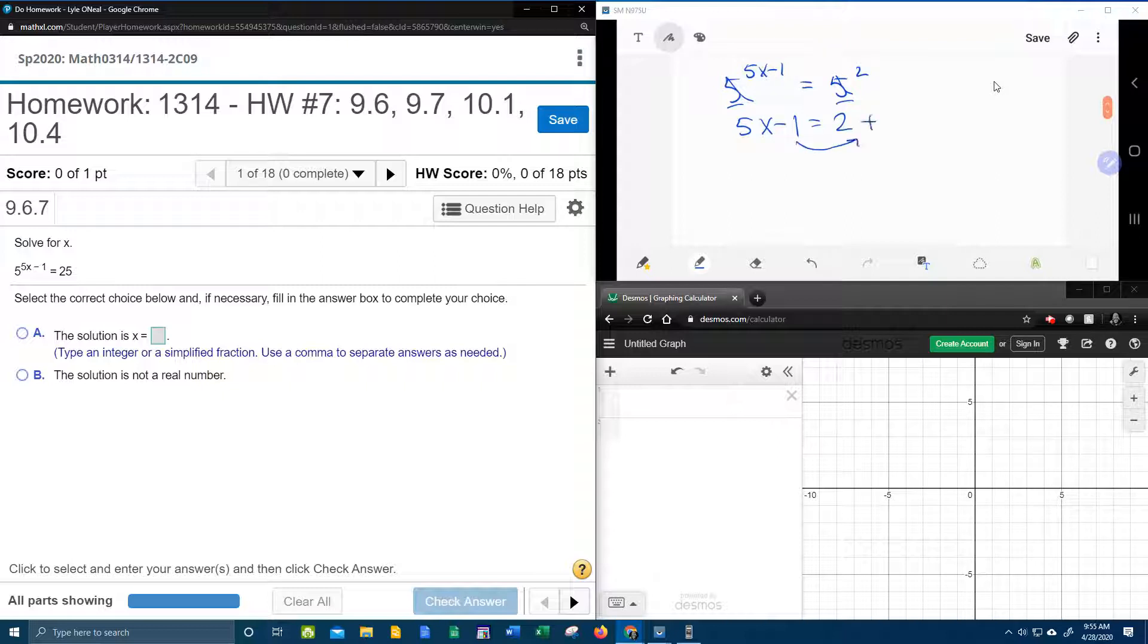So bringing the minus 1 over makes it positive. It gives me 5x equal to 3. And divide both sides by 5 gets my solution.